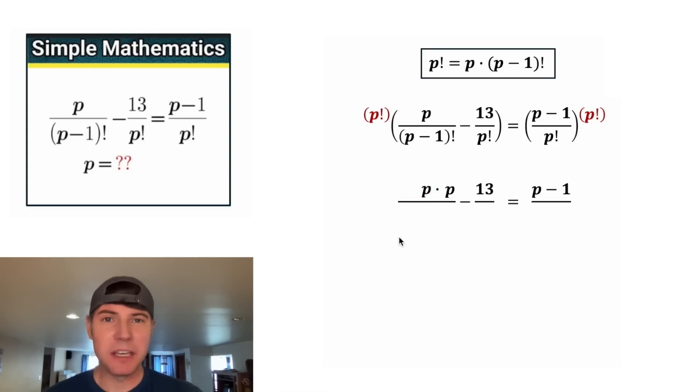And this becomes P times P, which is equal to P squared. So right now we have a P squared and a P, which makes us a quadratic. So we want to set everything equal to zero. So let's subtract P from both sides and let's add one to both sides. On the left-hand side, we can put this negative P right here. And negative 13 plus one is equal to negative 12. And on the right-hand side, all this stuff will cancel out, leaving us with zero.